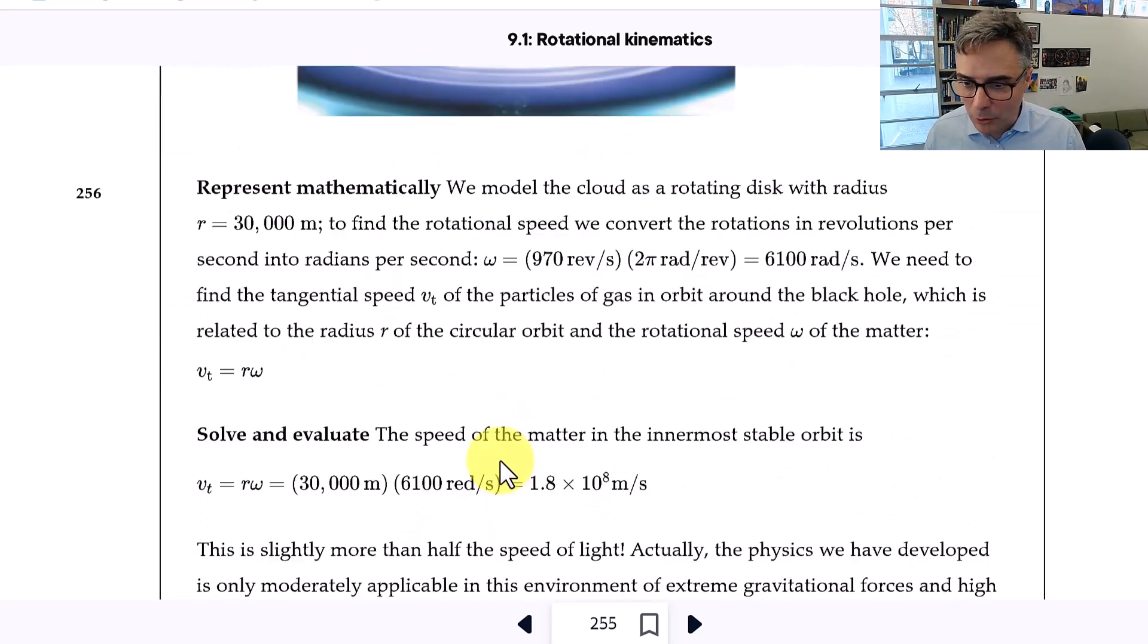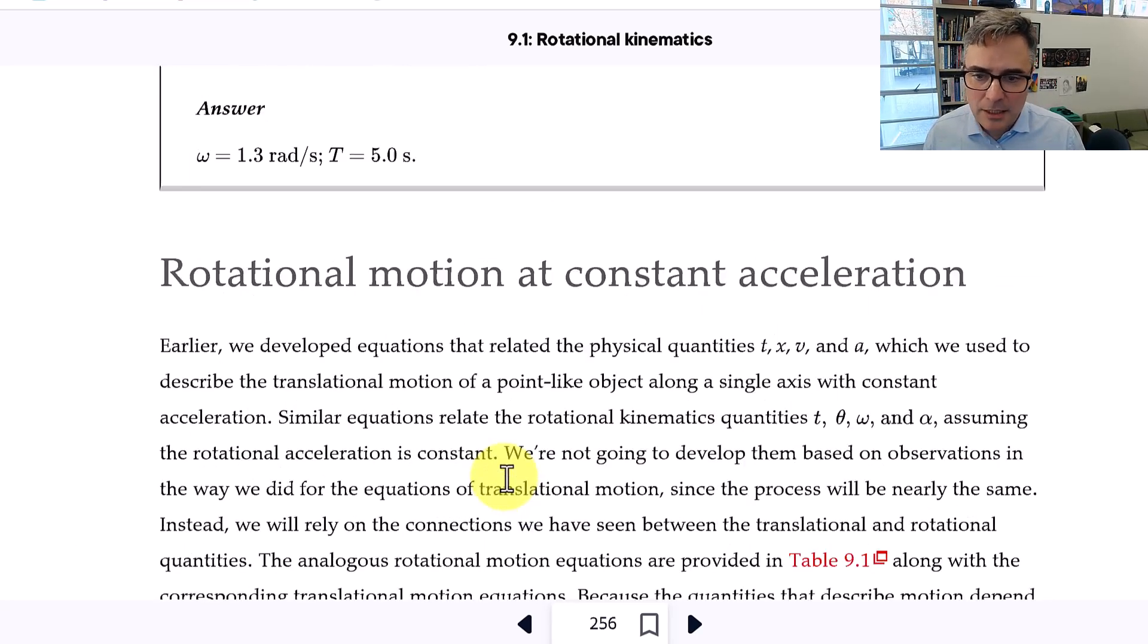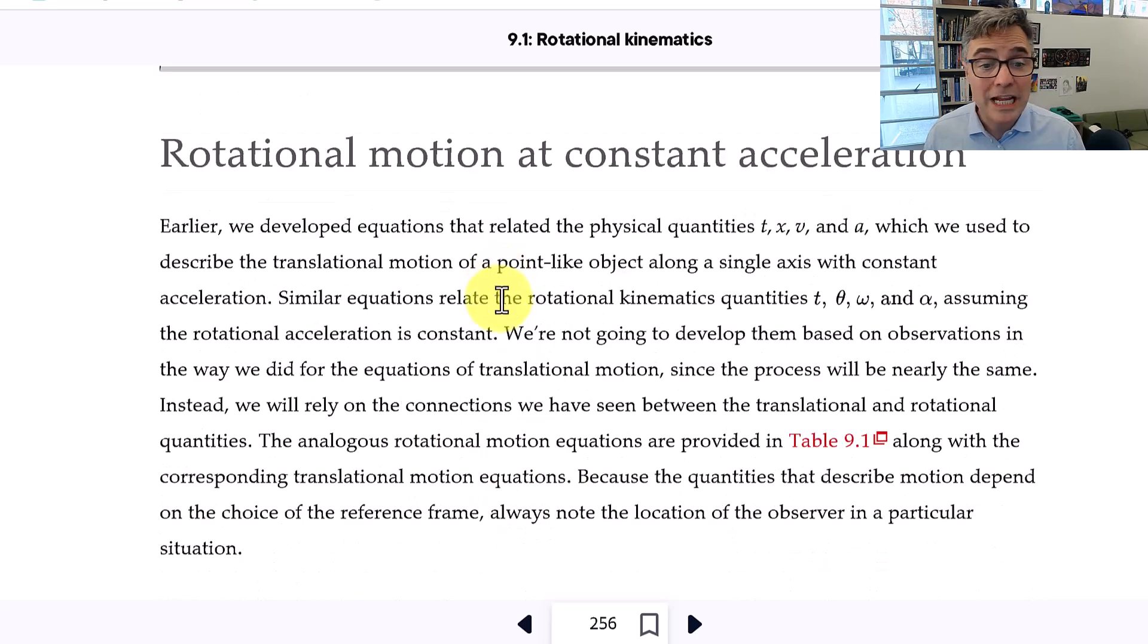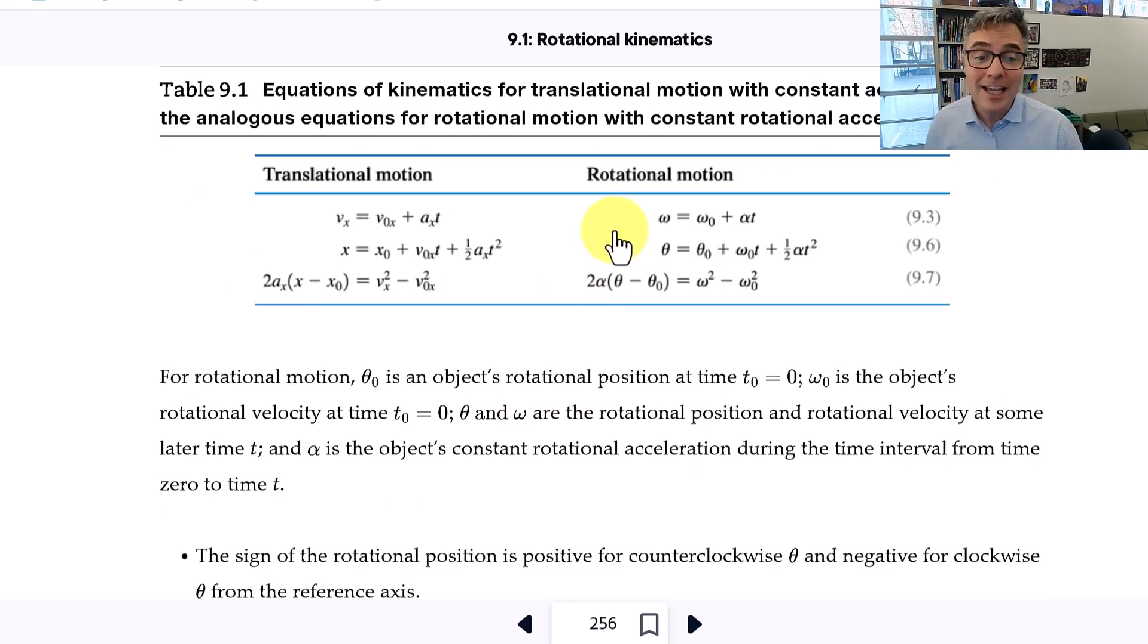Talks a little bit about black holes. There's a nice picture of that. Rotational motion at constant acceleration. So if alpha is constant, then you have these equations which are analogous to the kinematics equations from chapter 2. But now you've got rotational motion. So instead of v is v0 plus a times t, you've got omega is omega zero plus alpha times t. And then theta is initial theta plus omega initial times t plus one half alpha t squared.